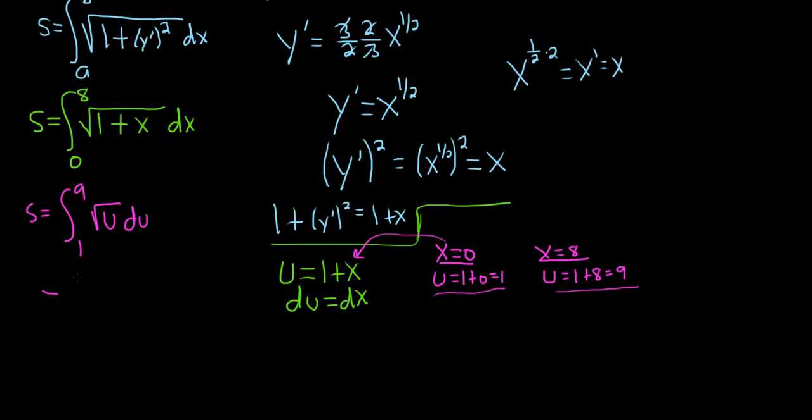Whenever we have a square root function, we should rewrite it as something to a power. So we can write this as u to the 1 half du. This way, we can use the power rule to perform the integration.